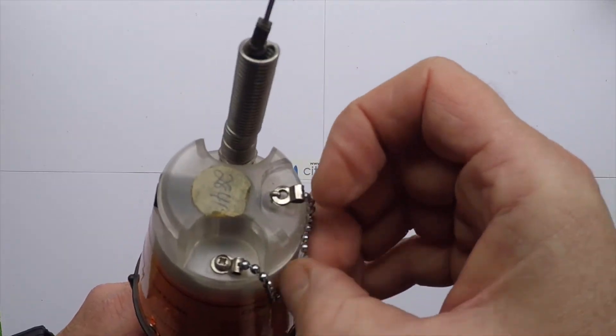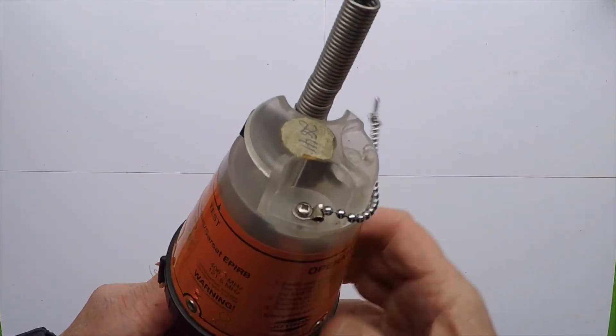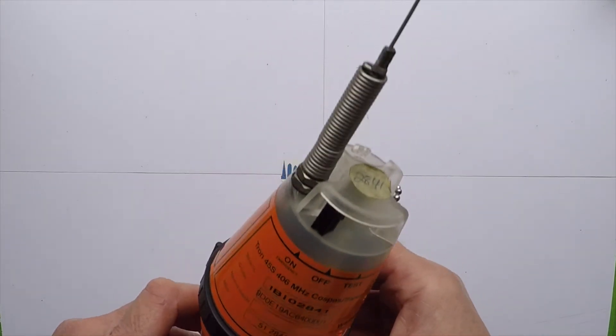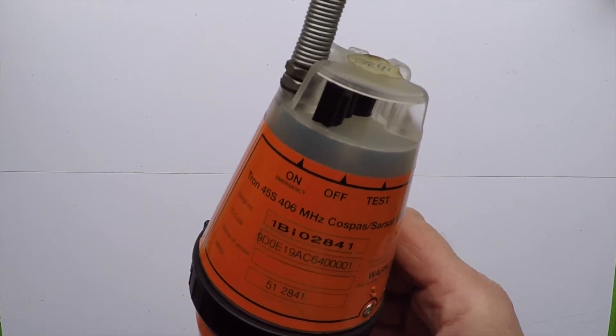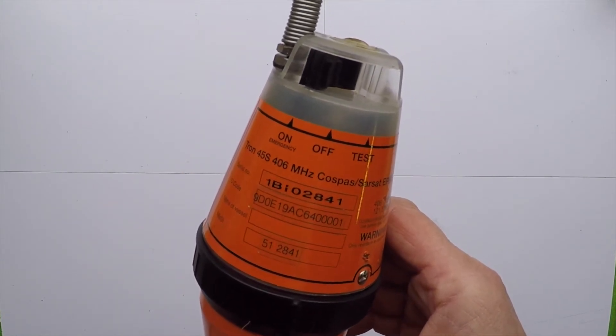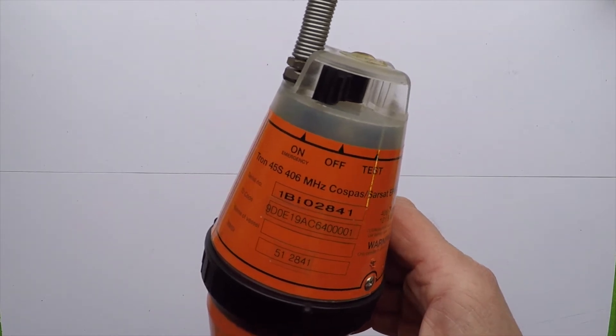That's it, turn it on. If it had batteries in, then the signal would go from here, 406 megahertz, up to the satellite and then down to the land user station and relayed back to the Coast Guard.